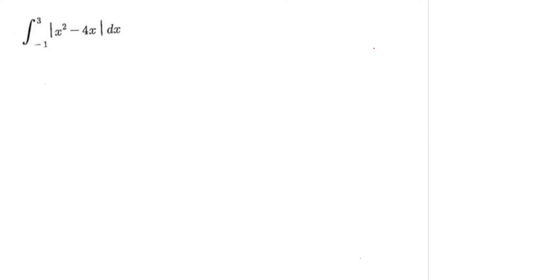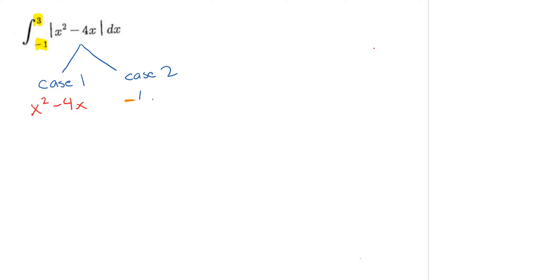For the last problem, I'm going from negative 1 all the way to 3 for the absolute value of x squared minus 4x. For absolute value functions with parabolas, remember there are always two cases. Case 1 is simply the inside of the absolute value: x squared minus 4x. Case 2 puts a minus sign in front: negative bracket (x squared minus 4x).